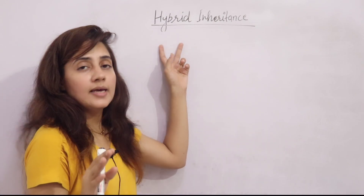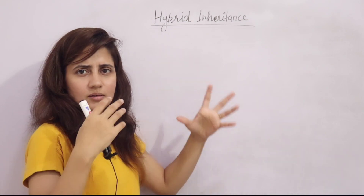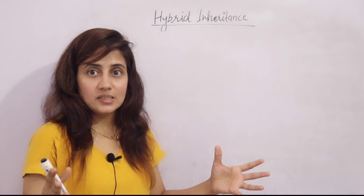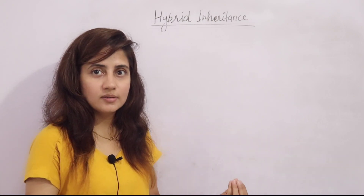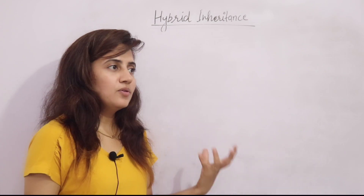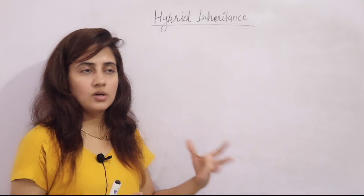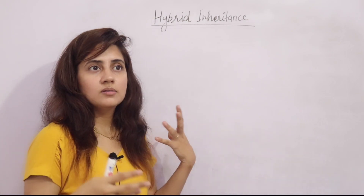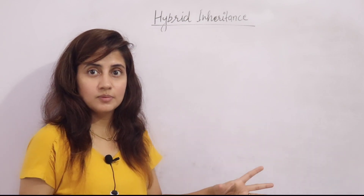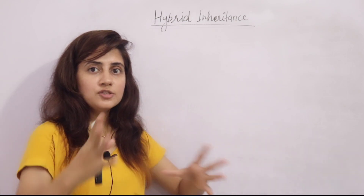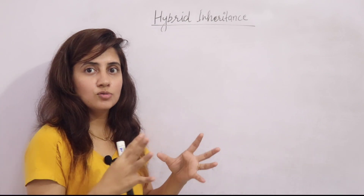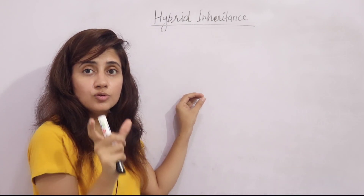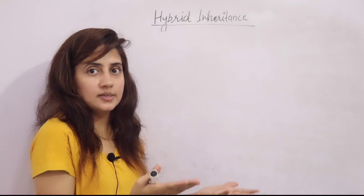So first, what is hybrid inheritance? Hybrid simply means a mixture of two or more things. For example, we talk about hybrid breeds of cows or buffaloes, or we use hybrid seeds for farming — those are mixtures of two or more things. Similarly, in inheritance, hybrid inheritance is a mixture or combination of two or more types of inheritance.